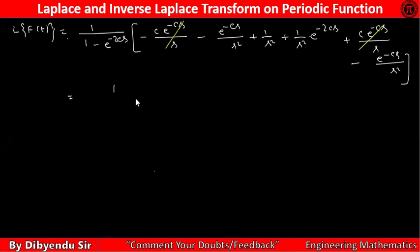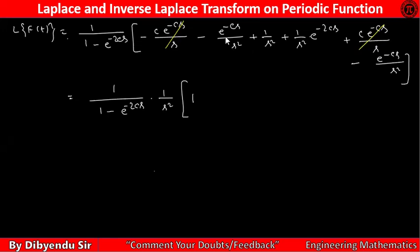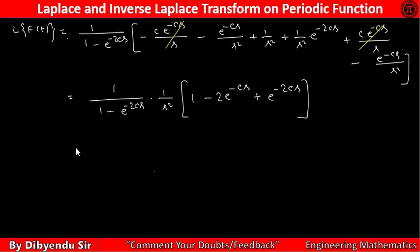So finally you are getting one by one minus e to the power minus 2cs. In the remaining terms, 1/s² is common, so taking 1/s² as common: from this we get 1, then minus e to the power minus cs, and minus e to the power minus cs, giving minus 2e to the power minus cs.